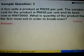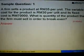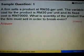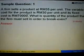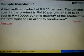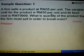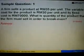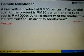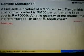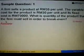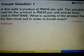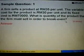Look at sample question one. A firm sells a product at RM35 per unit — this is the selling price per unit. The variable cost for the product is RM30 per unit — this is the cost price. And the fixed cost is given as RM70,000. What is the quantity of the product that the firm must sell in order to break-even?